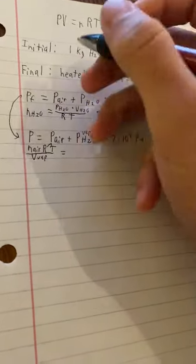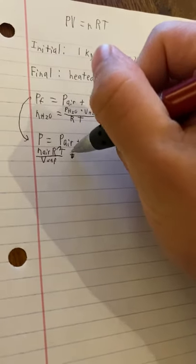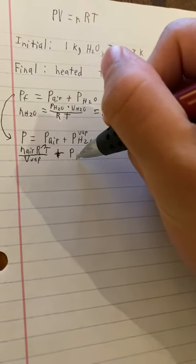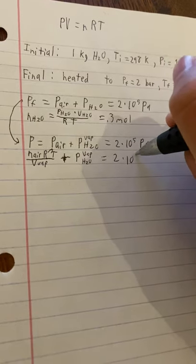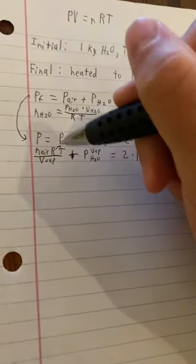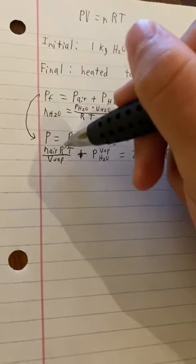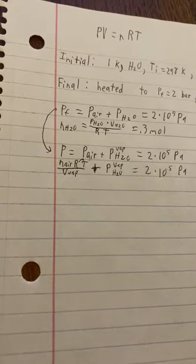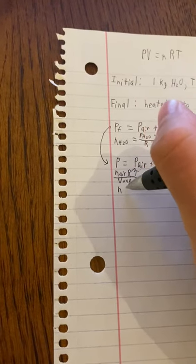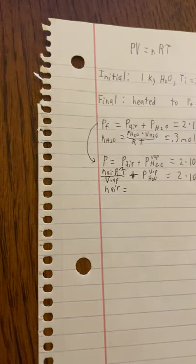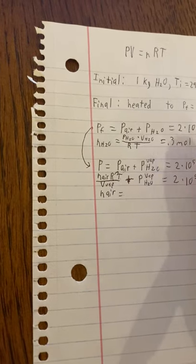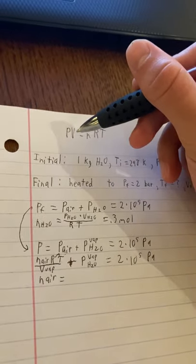And we can add this pressure of the H2O in the vapor phase, and this must be also equal to two times ten to the fifth Pascal. And that's because this right here all equals the P air. So here, let me move this down some. And we can also write in vice versa, n air equals what will be PV over RT.